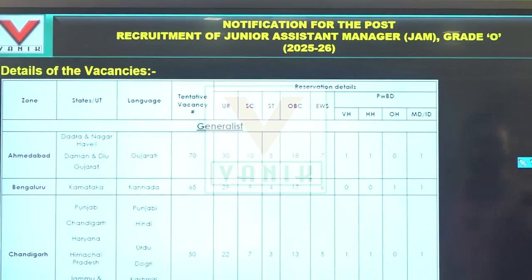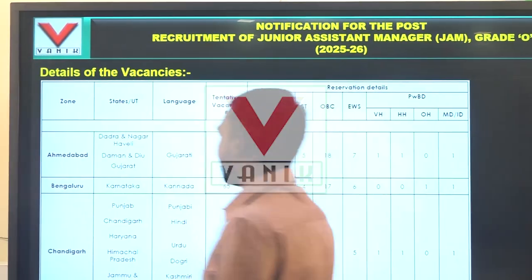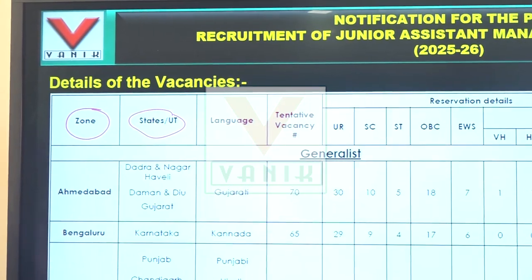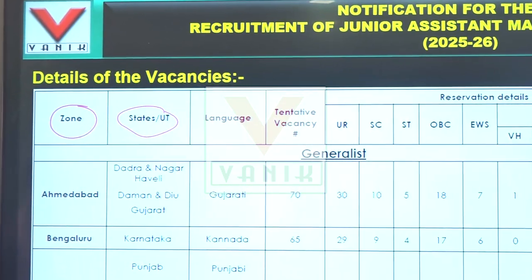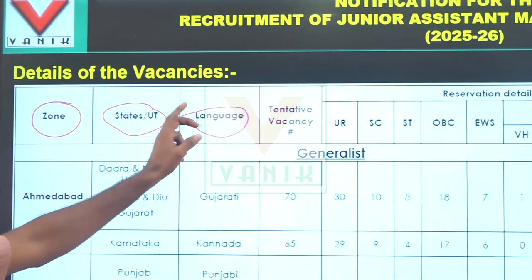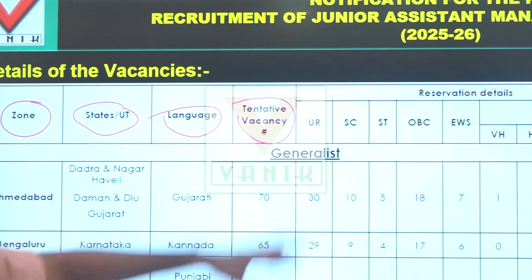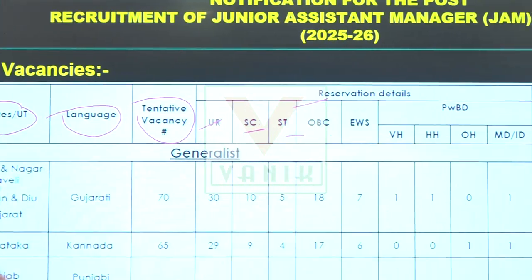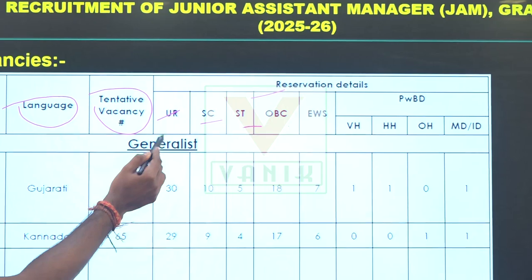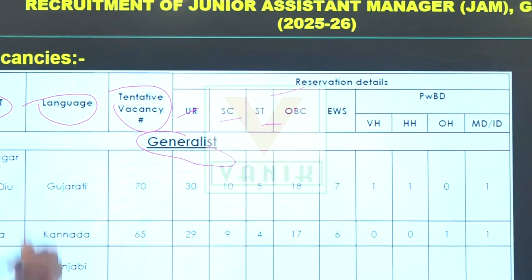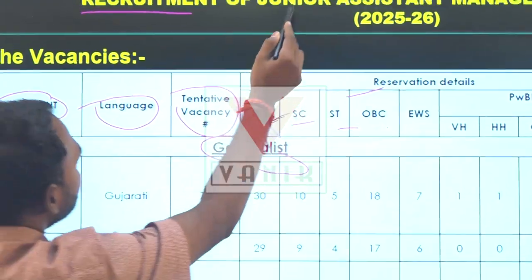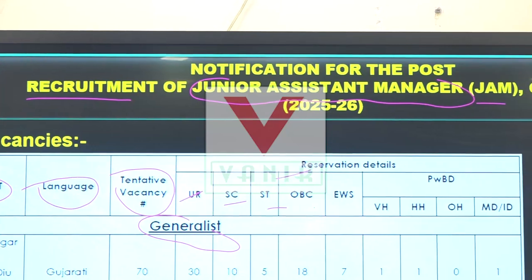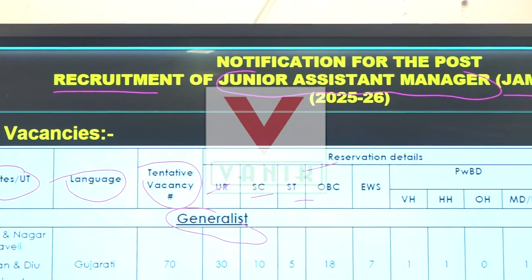This is basically the details of the vacancy. We have different zones, co-state and union categories, union-territory order, language proficiency, tentative vacancies, and different reservation details like URP and HTSC. For the generalist post, we have recruitment of Junior Assistant Manager, J.A.M. Grade O, which is 2025-2026.